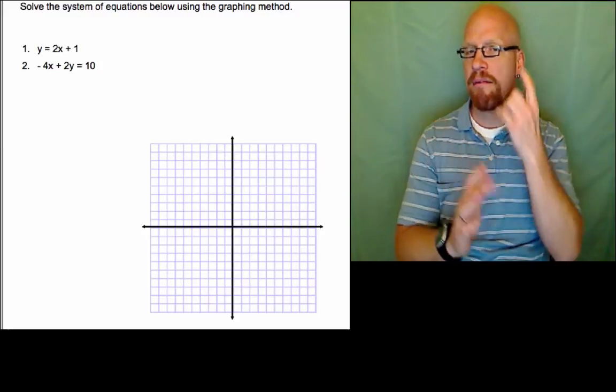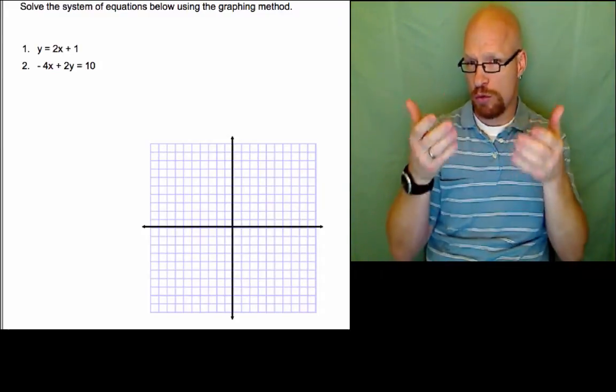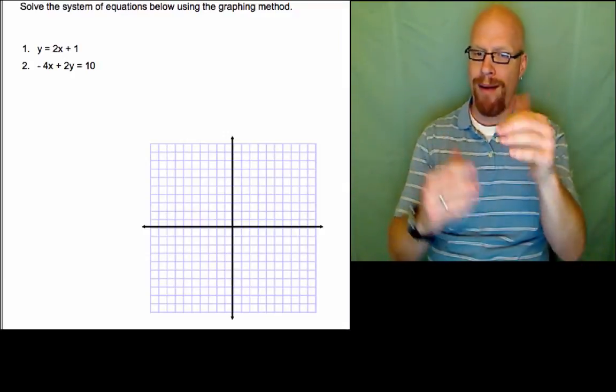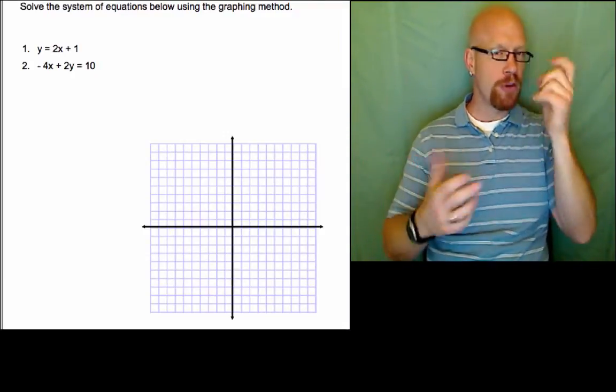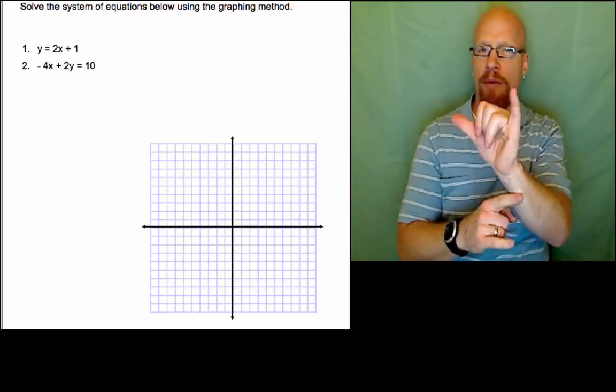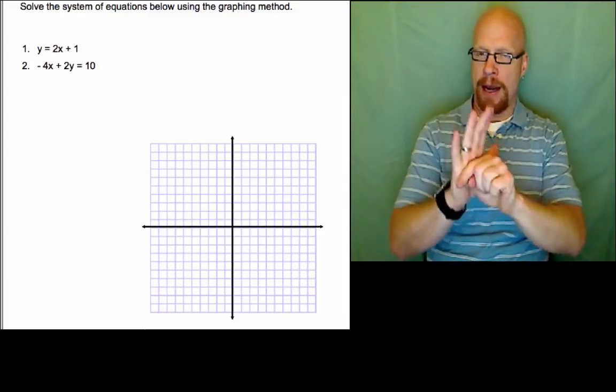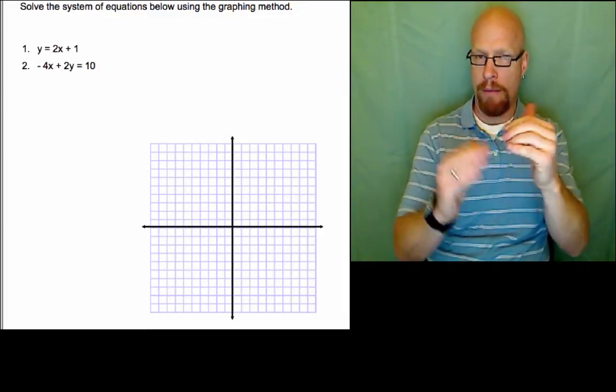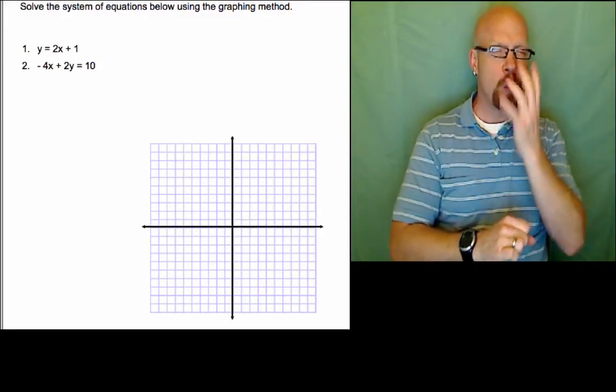Okay, hello. For this vlog we're going to use a graphing method again for a system of two equations. We have two equations here in front of us. The first one being y equals 2x plus 1. This thrills me because it's ready to graph. I don't need to do any work to isolate y. The second one is negative 4x plus 2y equals 10.